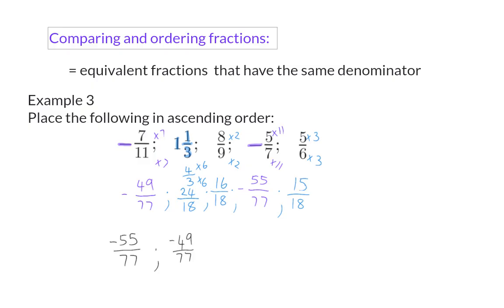Now, I can compare the three numerators of 24, 16, and 15, and because I'm writing in ascending order, the smallest one will come first, and that is 15 over 18. Next up, we have 16 over 18, and lastly 24 over 18. It is important to always write your final answer in terms of the originally given fractions.